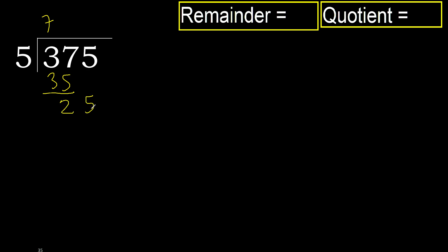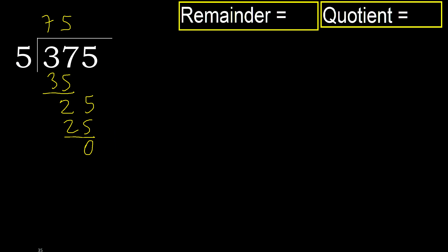Bring down 25. 5 multiplied by 5 is 25, which is not greater. 25 minus 25 is 0. Next digit — there is no number, therefore finish it.